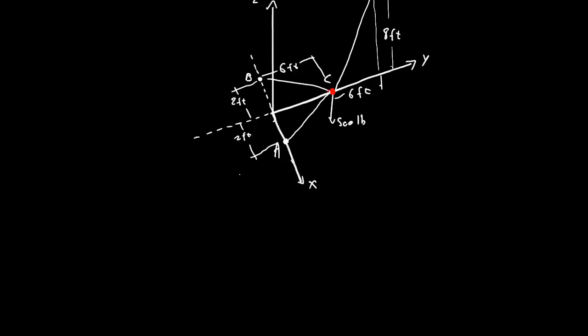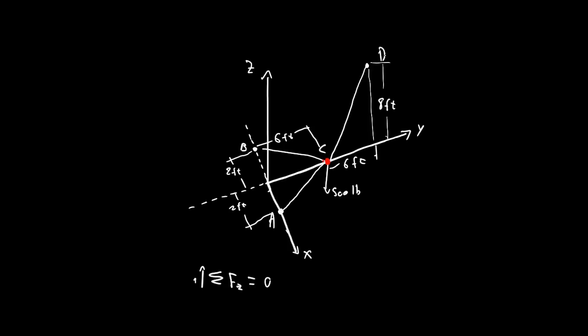So, basically we can start with sigma forces in the z direction, sigma Fz, such that positive z is positive. And we kind of show that here, but the summation of the forces in z have to equal zero for this to be in equilibrium. So, what contributes to the z? Well, we have this d force and we have this. These are in the xy plane, so they don't contribute a z component.